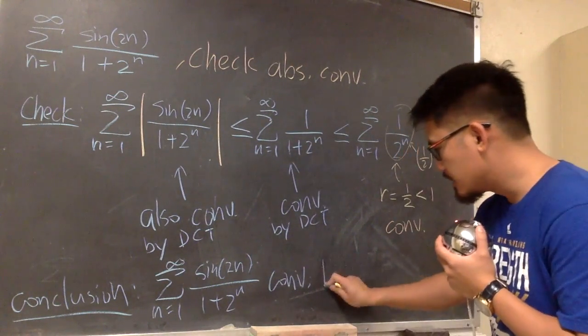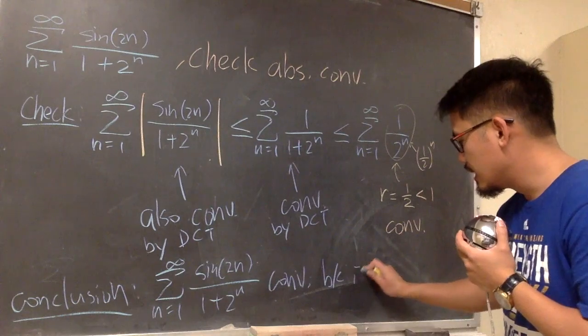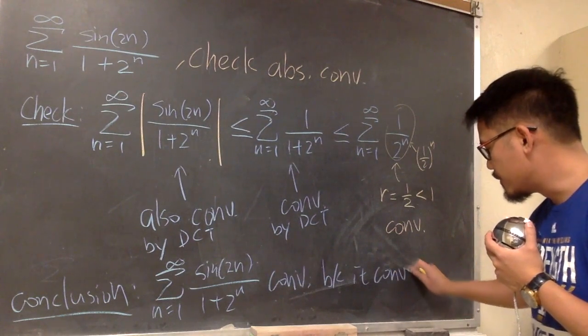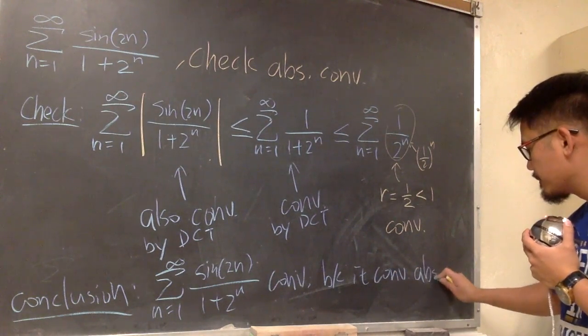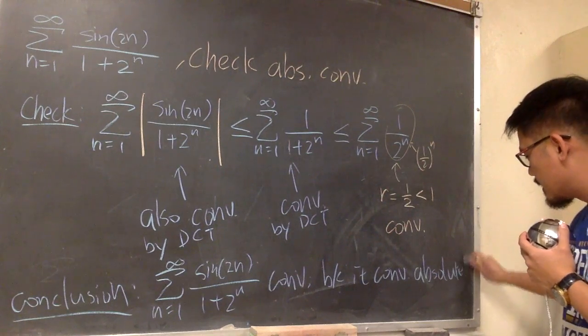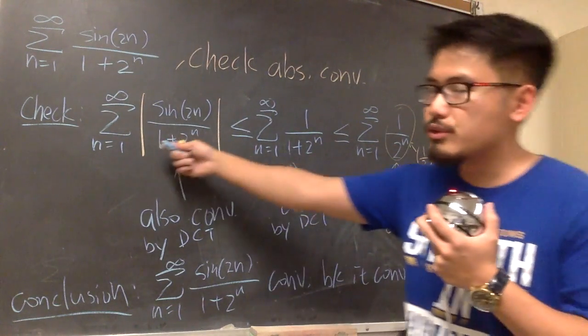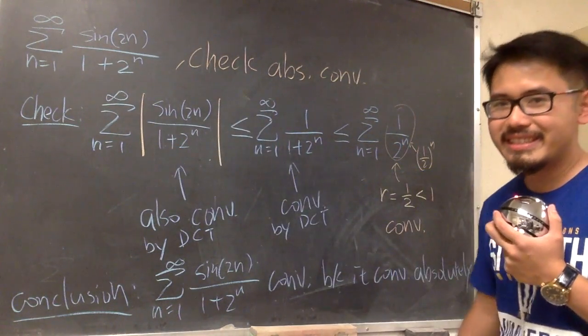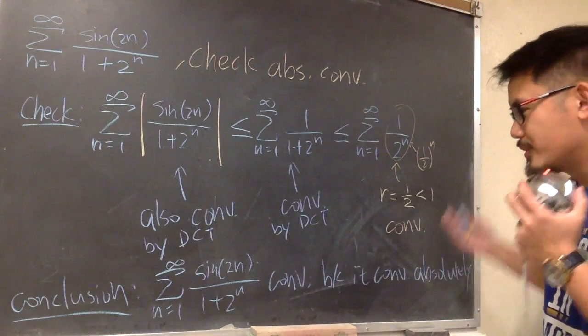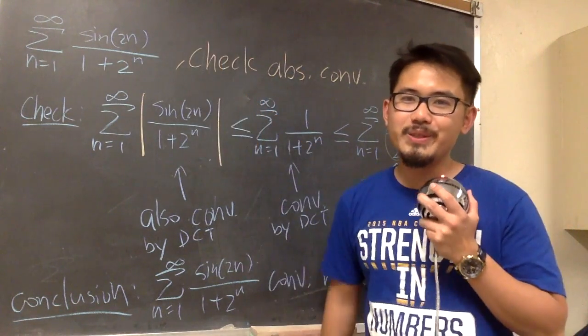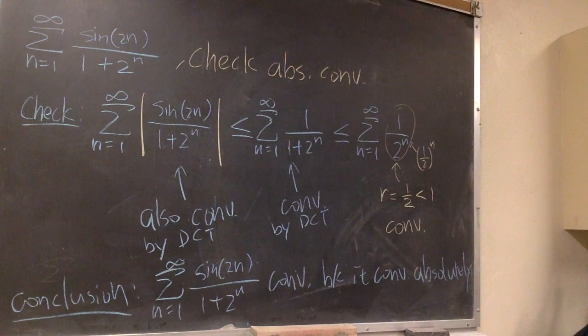Converges because it converges absolutely. Meaning, the absolute value version of that converges. So this will be a good argument to show that it converges. That's it.